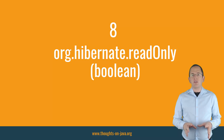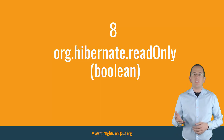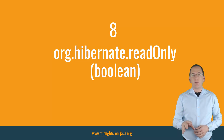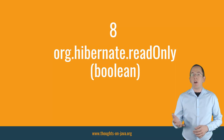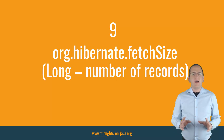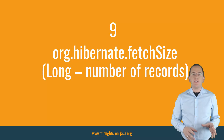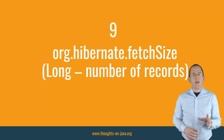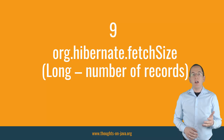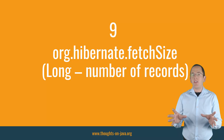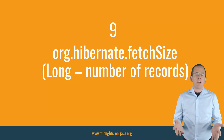If you will not apply any changes to the selected entities, you can set the org.hibernate.readOnly hint to true. This allows Hibernate to deactivate dirty checking for these entities and can provide a performance benefit. Hibernate provides the value of the org.hibernate.fetchSize hint to the JDBC driver to define the number of rows the driver shall receive in one batch. This can improve the communication between the JDBC driver and the database if it's supported by the driver.